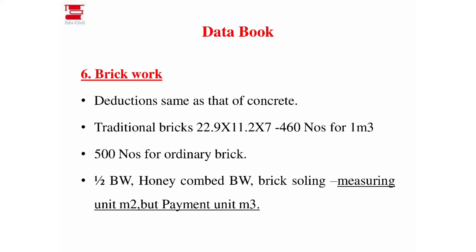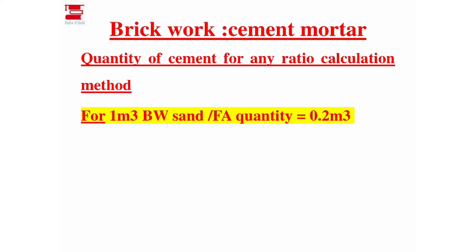Brick sealing is measured at 1.2 m². The payment unit is 1.2 m² or 1.3 m². The next topic is brick masonry. We call the concrete work PCC and RCC. For PCC, the value is 1.95 m³ and 1.5 m³. For RCC, it is 1.9 m³ and 1.5 m³.